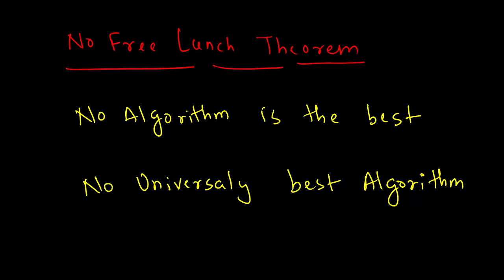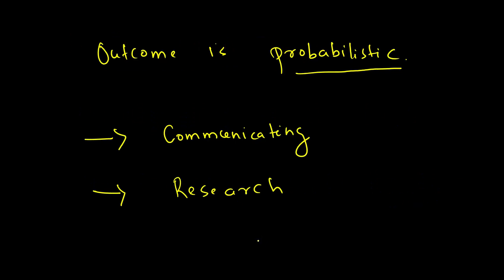This theorem says that there is no algorithm which is the best algorithm, or there is no universally best algorithm. Okay, so why is it so?